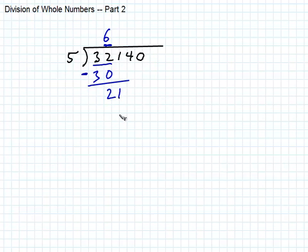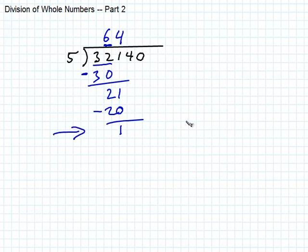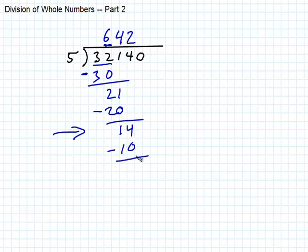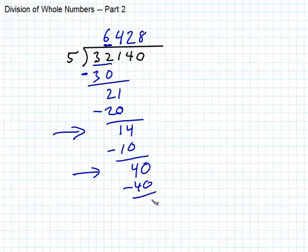Bring down the next digit. This is 5 into 21. Round to 20 — 5 times 4 is 20, so 4 is a good guess. 4 times 5 is 20, subtract and I get 1. Check: 1 is smaller than 5, so we're good. Bring down the next digit. 5 into 14 — 3 times 5 is 15, too big, so it's 2. 2 times 5 is 10, subtract and get 4. Check: 4 is smaller than 5. Bring down the 0. 5 into 40 — 5 times 8 is 40. Subtract and get 0. The answer is 6,428.